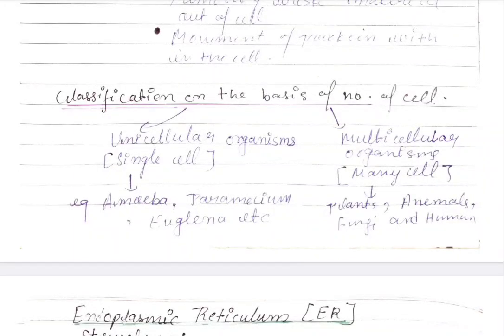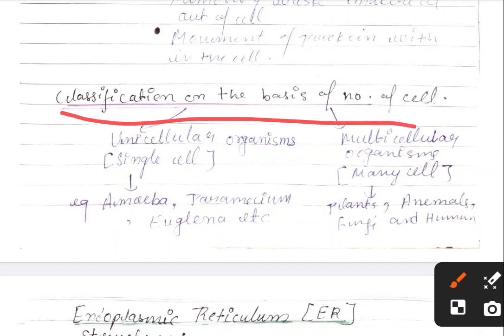Now, let us discuss classification on the basis of number of cells. Unicellular organisms have a single cell, while multicellular organisms have many cells.